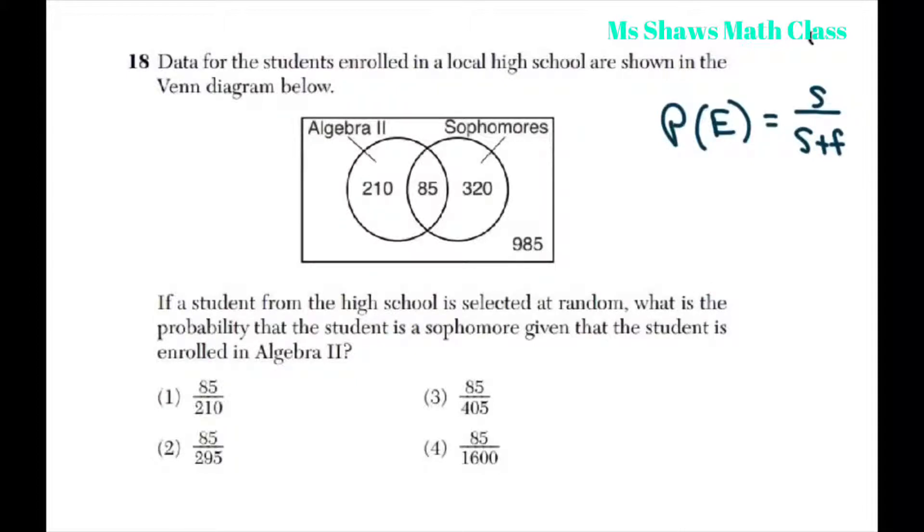If a student from the high school is selected at random, what is the probability that the student is a sophomore given that the student is enrolled in Algebra 2?